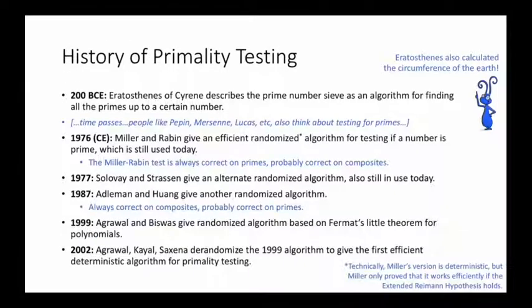People have been thinking about primality testing for a long time. Starting as long ago as 200 BCE, Eratosthenes described the prime number sieve, which is basically a fancy version of the trial division algorithm we saw before. This is an algorithm for finding all the primes up to a certain number. Then some time passed, and in the intervening centuries, a bunch of people also thought about testing for primes, but no one came up with an algorithm that was both efficient and also worked for any number n until the 1970s.